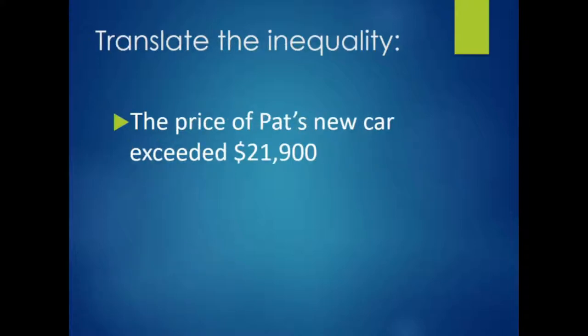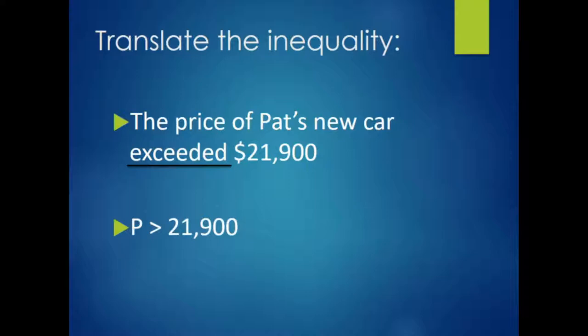The price of Pat's new car exceeds $21,900. 'Exceeds' is our key word. The inequality symbol is greater than. The representation is P for price of the car, greater than $21,900.